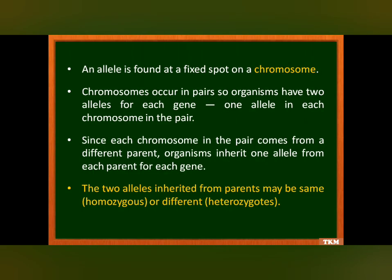An allele is found at a fixed spot on a chromosome. Since chromosomes occur in pairs, organisms have two alleles for each gene — one allele on each chromosome in the pair. Since each chromosome in the pair comes from a different parent, organisms inherit one allele from each parent for each gene. The two alleles inherited from parents may be the same or different.